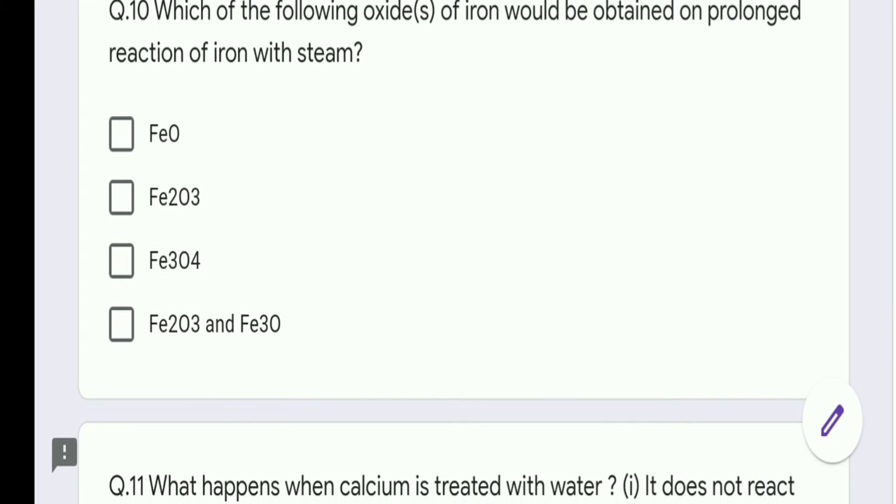Which of the following oxides of iron would be obtained on prolonged reaction of iron with steam? This is an important question from chapter 1 as well as chapter 3. In this case, a different oxide, that is Fe3O4, is formed.